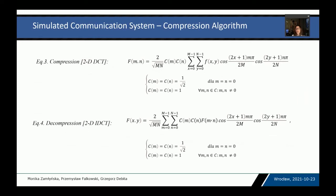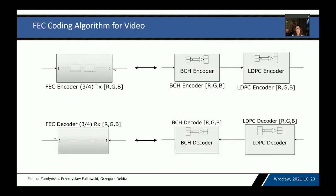Most video compression algorithms are licensed, so we decided to use a well-known method based on MPEG. The implemented algorithm divides every video frame into 8×8 blocks and calculates a transformation for every block. In our case, the transmitter uses a two-dimensional discrete cosine transform, and the receiver performs the inverse operation. The channel protection coding uses a combination of BCH and LDPC encoders, the same as in DVB-T2, with a coding efficiency of 3/4.